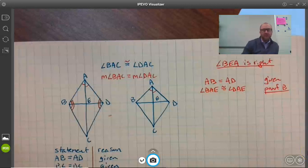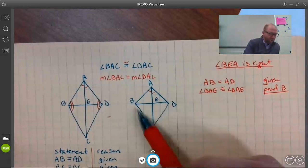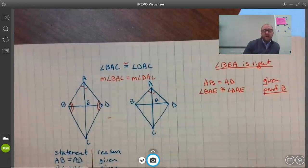All right, so the second proof here. In this case we're trying to prove the angle BEA in the same diagram, so that's BEA. Trying to prove the angle BEA is a right angle.